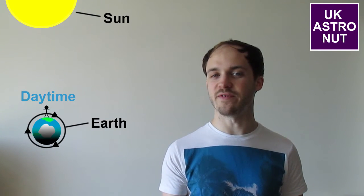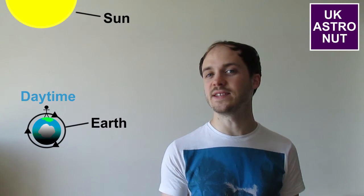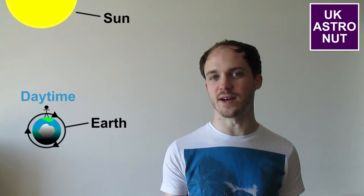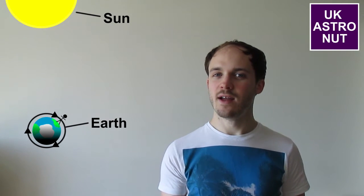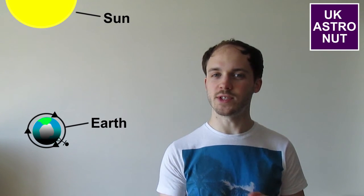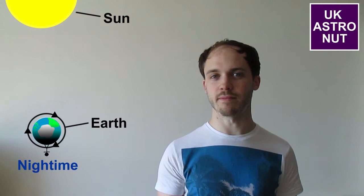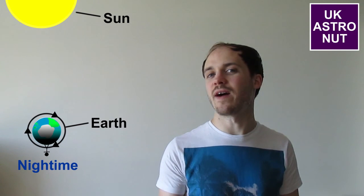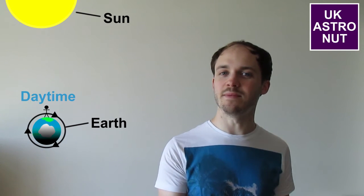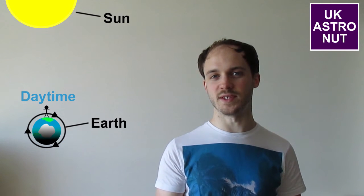At some point in time one side of the Earth is facing towards the Sun, and this is what causes daytime. Twelve hours later that same side of the Earth has rotated around to face away from the Sun, and this is nighttime. Twelve hours later the same side of the Earth faces back towards the Sun again.